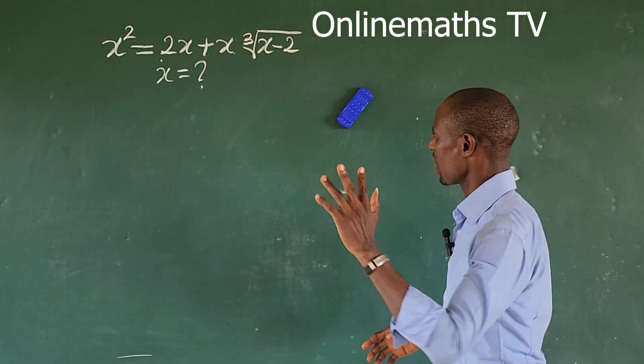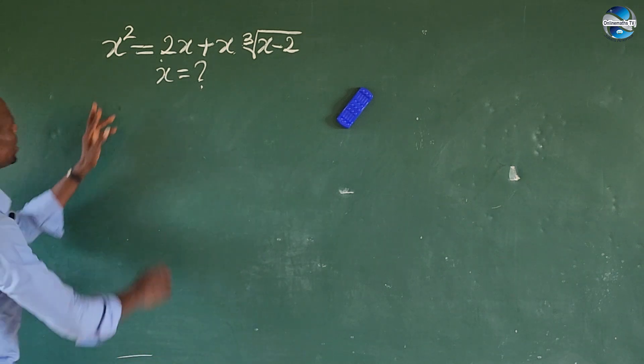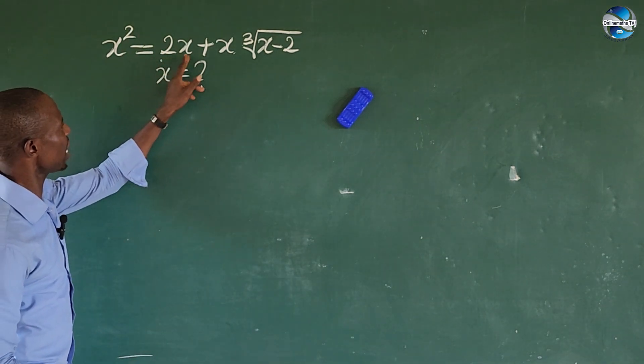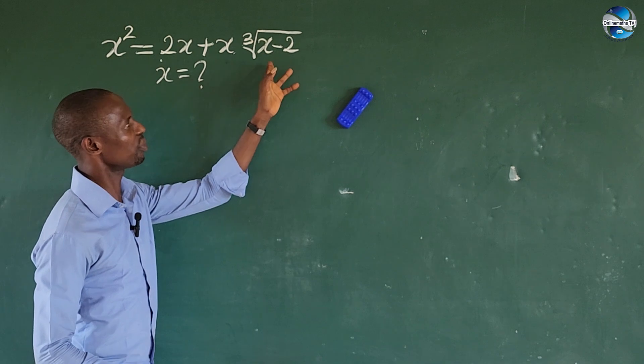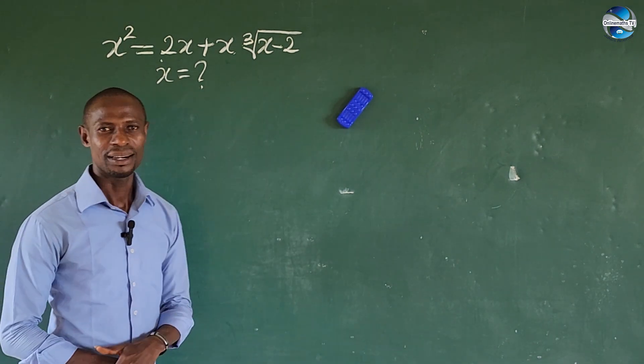Let's go into today's challenge without much waste of time. The question is: x to the power of 2 equals 2x plus x into the cube root of x minus 2.